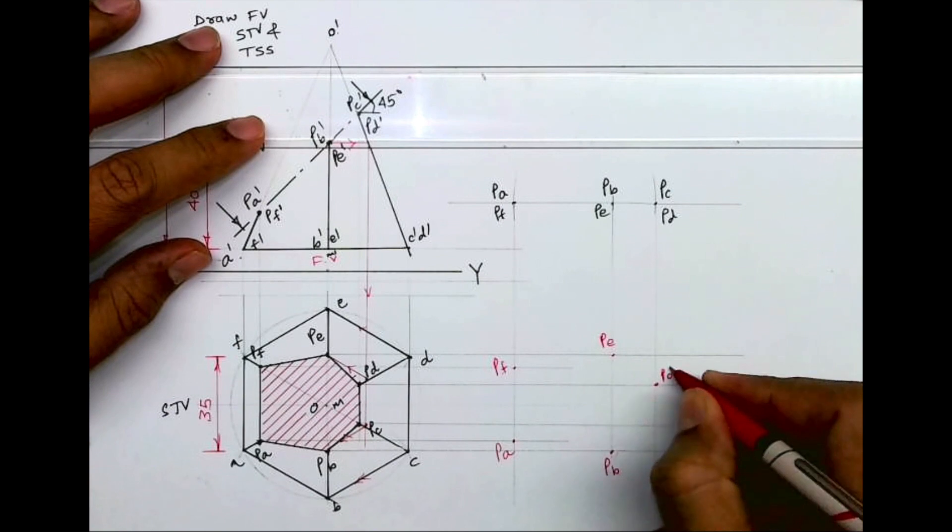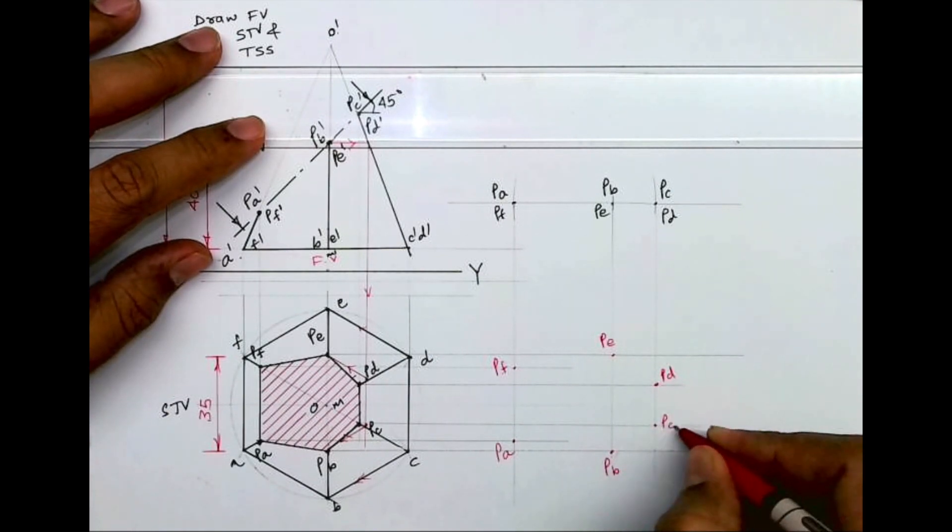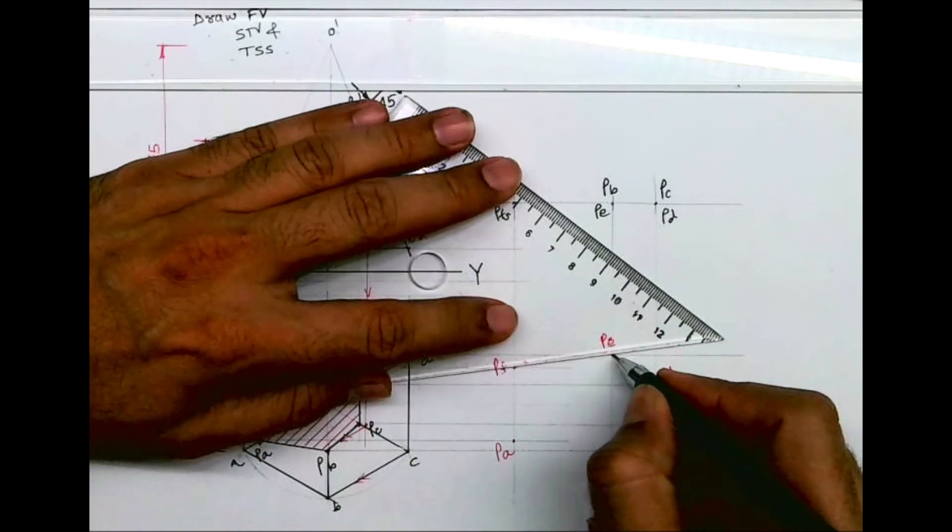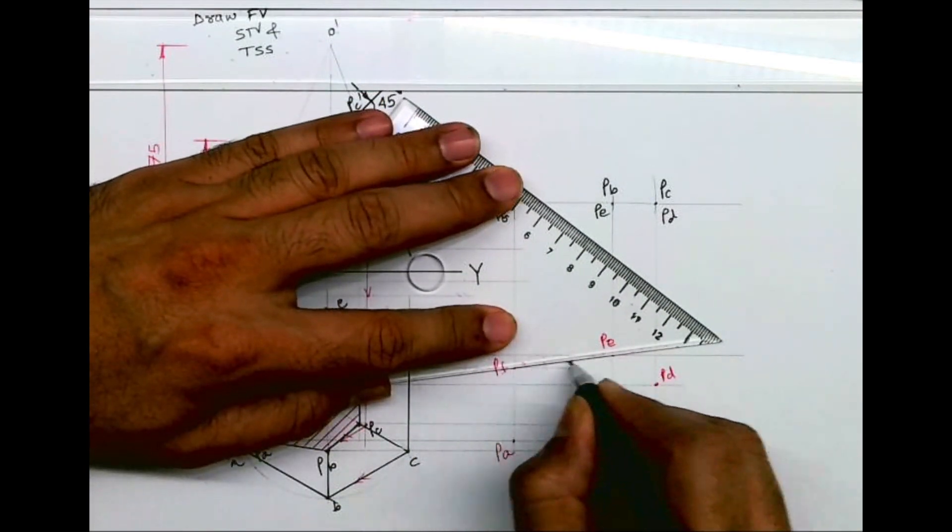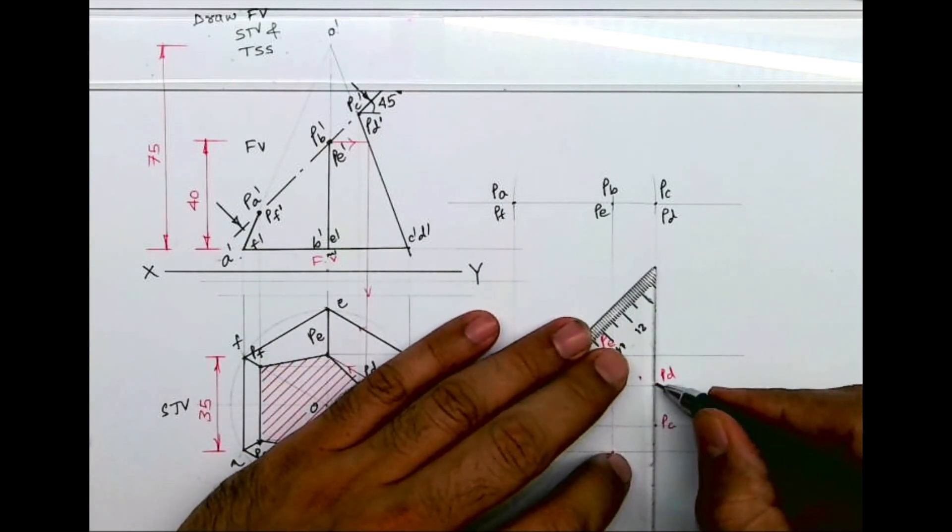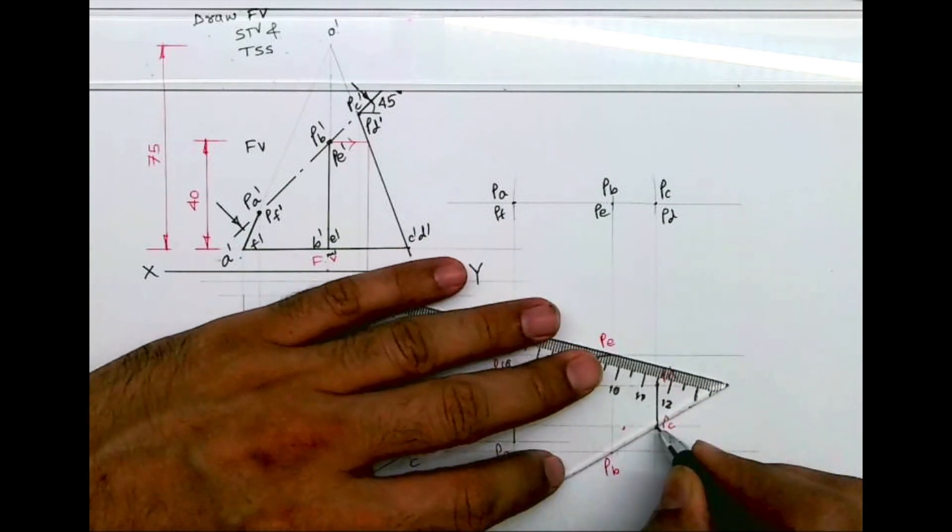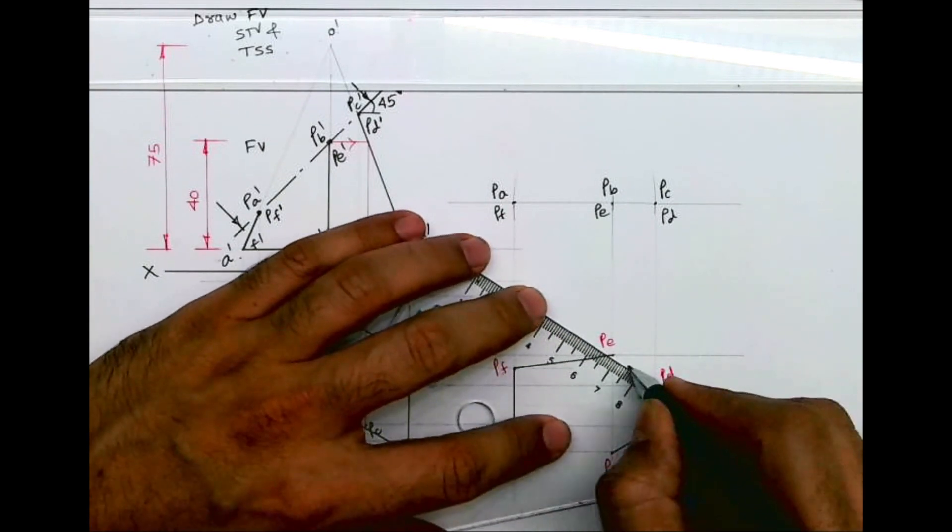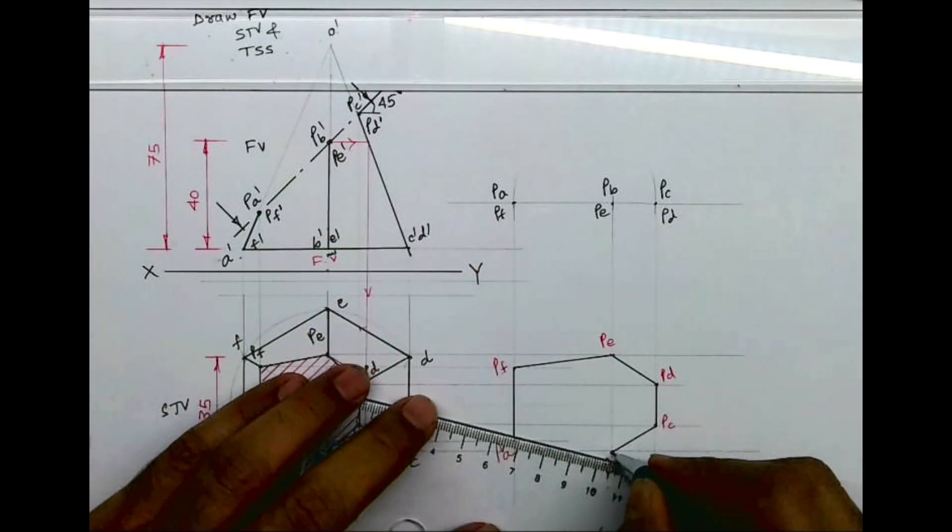Now what we need to do is join all these lines, and we'll get TSS. So I hope everyone understood how to draw sectional top view, front view, and the sectional shape of a hexagonal pyramid. Thank you.